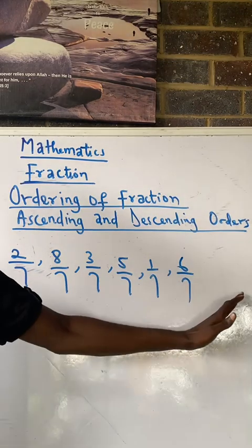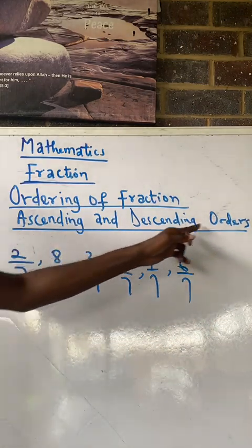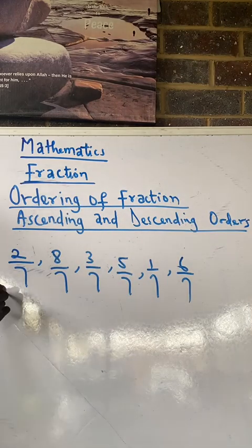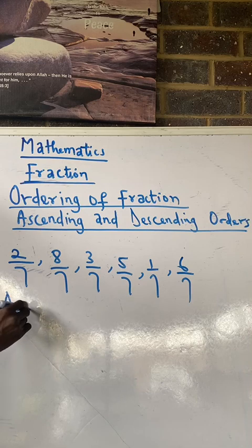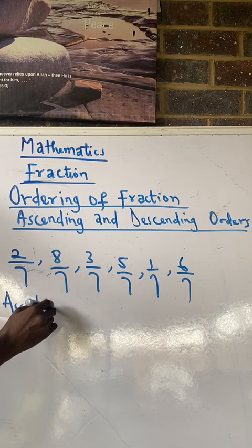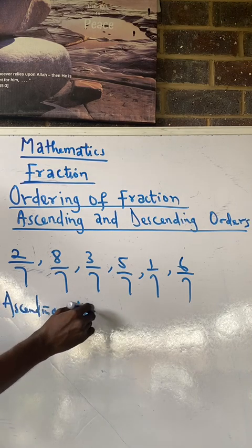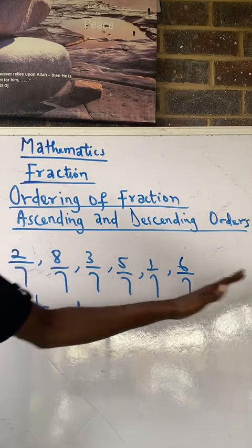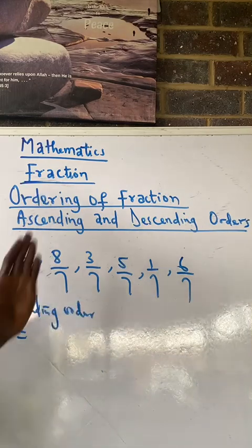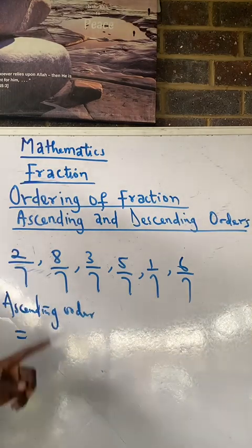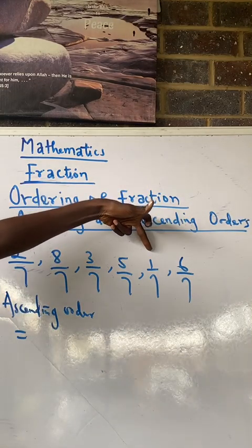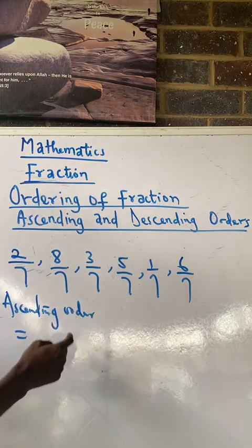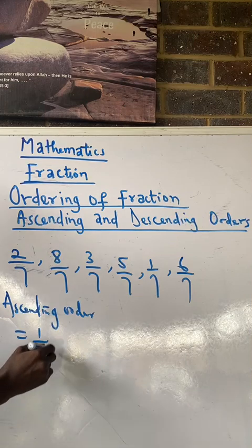And you are asked to arrange this either in ascending or descending order. Let's start from the smallest to the biggest. Now, if you have to arrange this, first of all, everything has the same denominator. The smallest one will be the one with the smallest numerator, which is 1. Just like I have illustrated it. So, in ascending order, that means we start with 1 over 7.